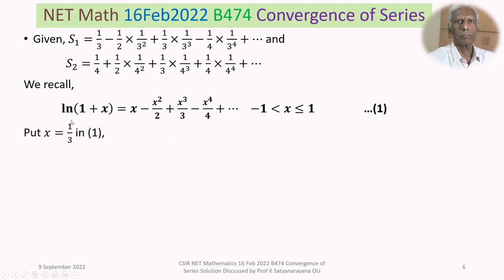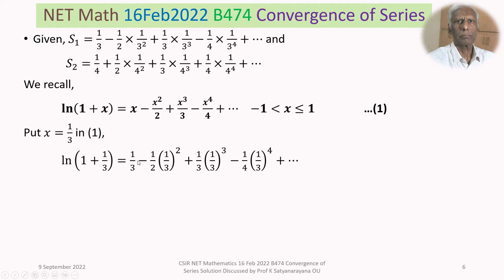Put x equal to 1/3 in equation 1. We get ln(1 + 1/3) equal to 1/3 minus 1/2 times (1/3)² plus 1/3 times (1/3)³ minus 1/4 times (1/3)⁴, plus so on and so forth. The left-hand side is ln(4/3), and the right-hand side is precisely the series S1. Therefore S1 converges and its sum is ln(4/3).